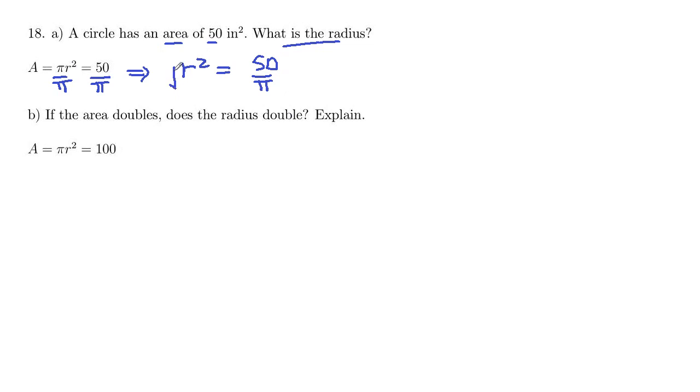And then take square roots on both sides to undo that square. So your r is going to be square root of 50 over pi.